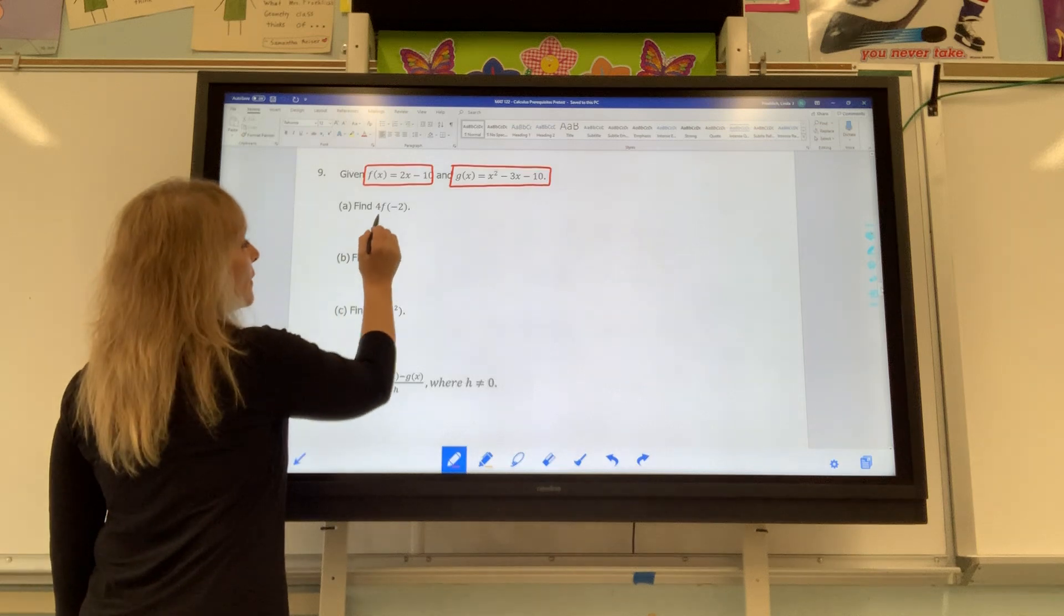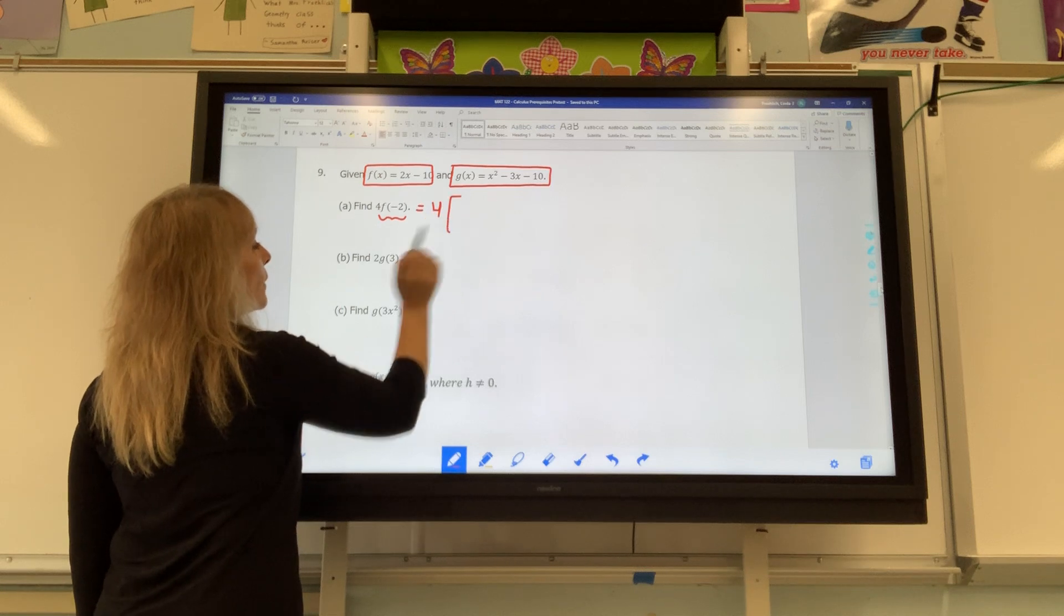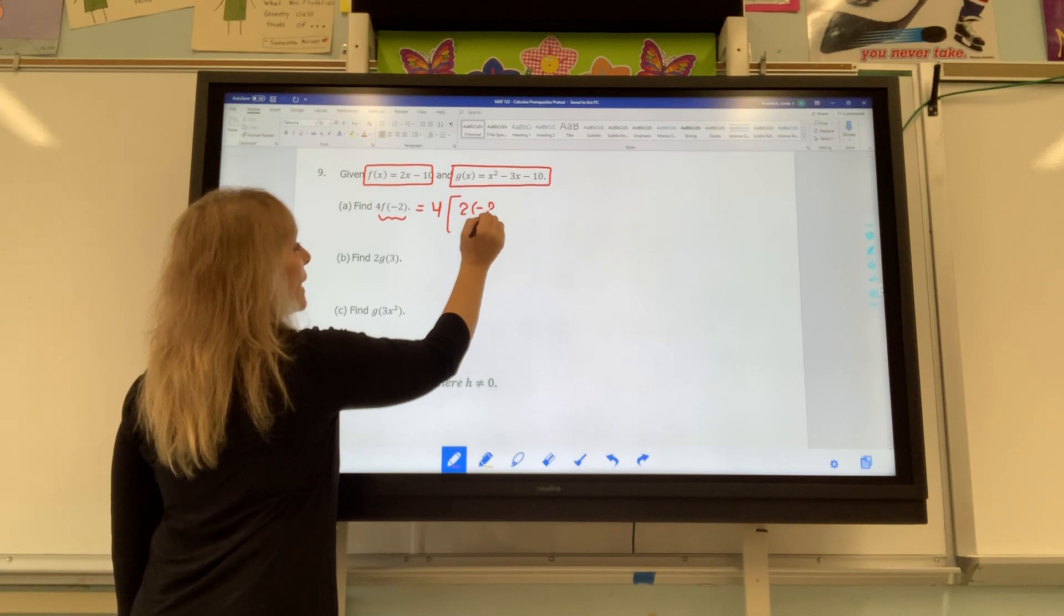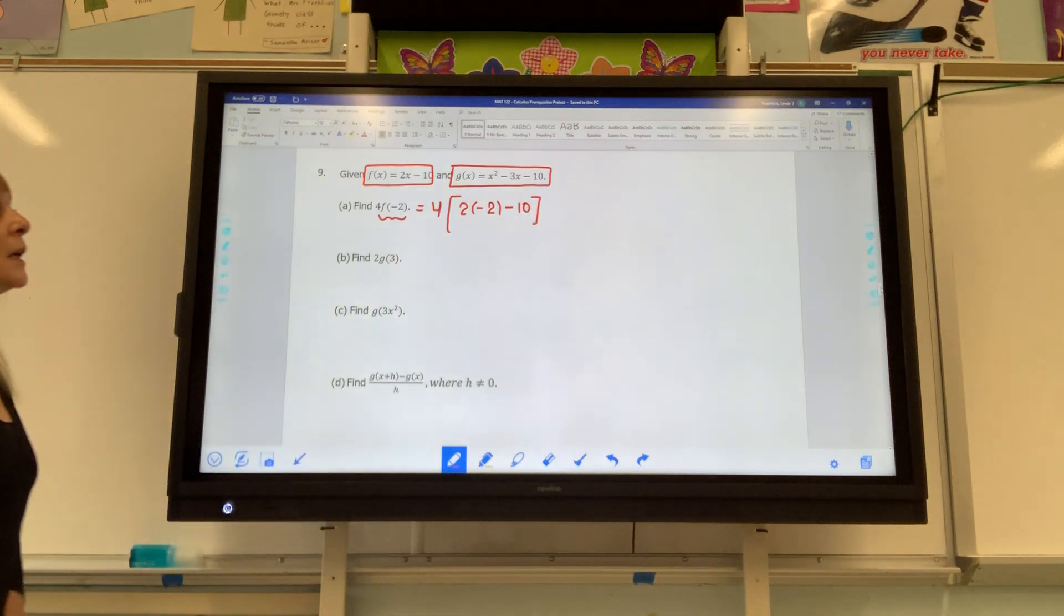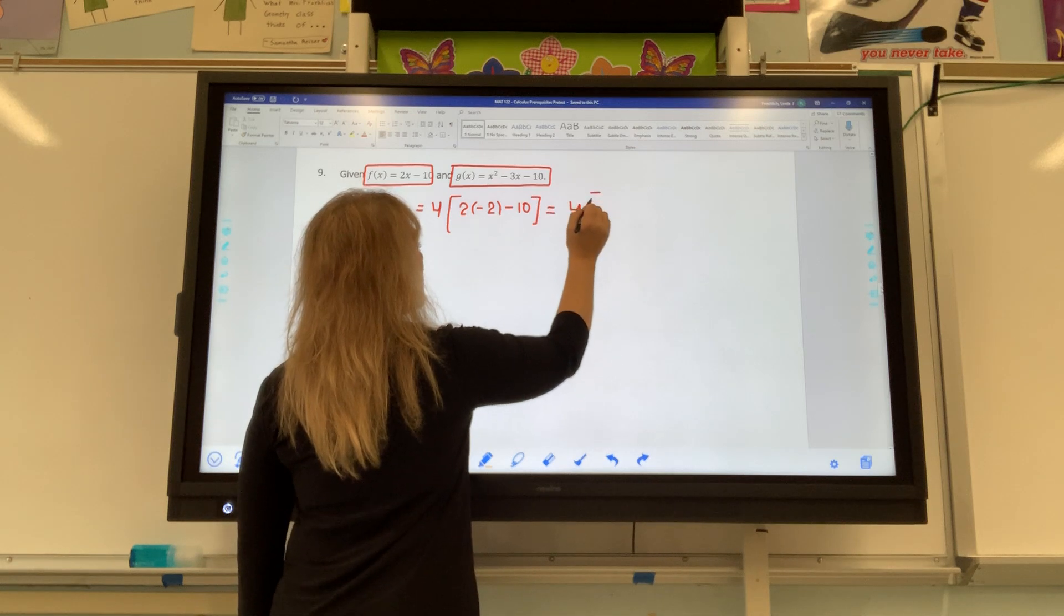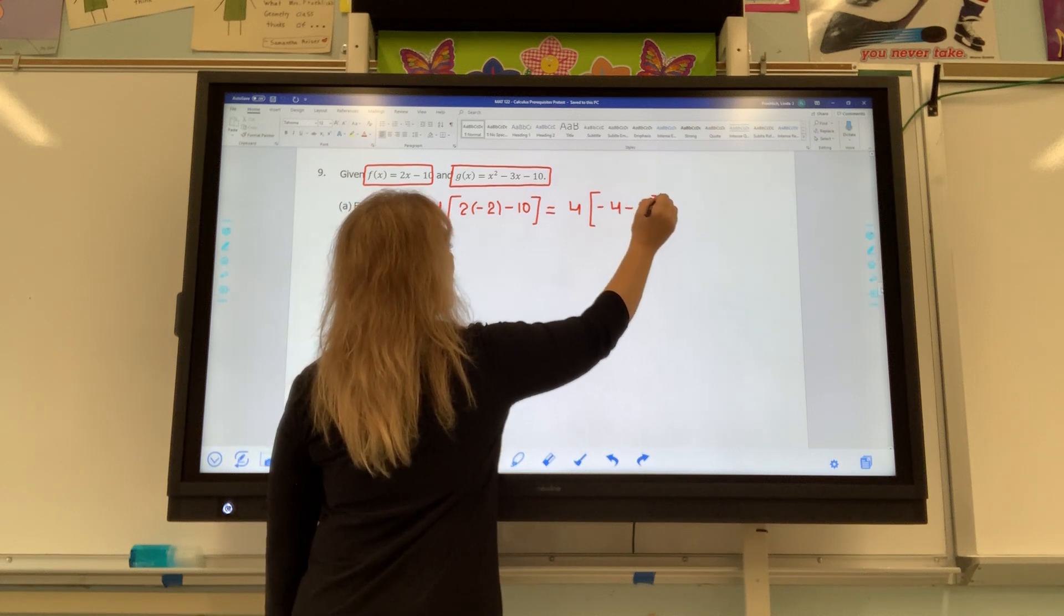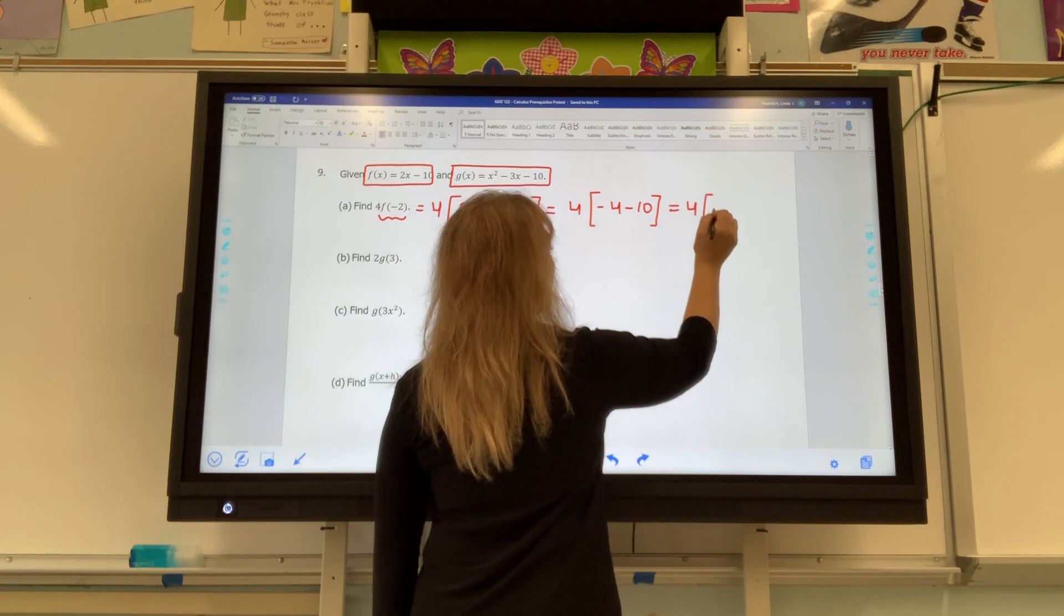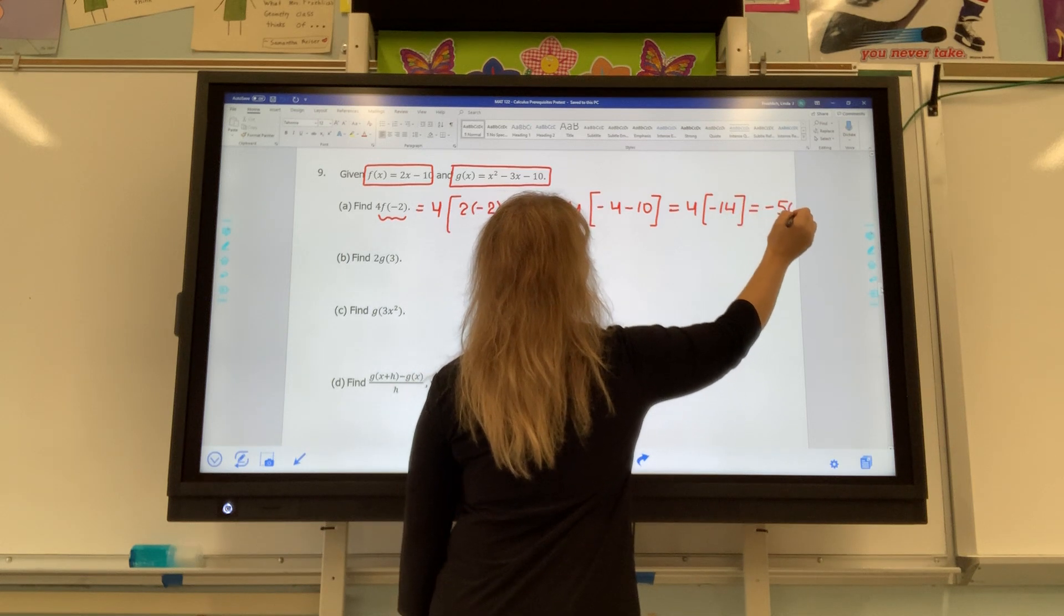When they ask for f of negative 2, you can put the 4 in the front of the whole problem because that's the coefficient, but you need to plug in a negative 2 for all the x's that appear on the right-hand side of f. Inside those parentheses, 2 times negative 2 is negative 4, but negative 4 minus 10 gives you negative 14. And when you multiply them together, you get negative 56.